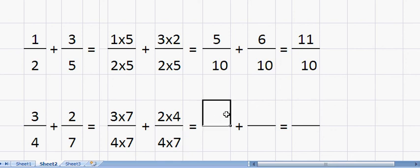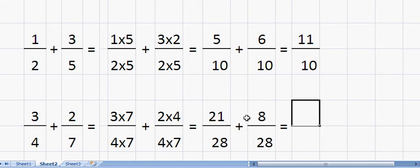So that gives us on the top 21, and on the bottom 28. On the top here we've got eight, and on the bottom we've got 28. That's four by seven. And when we add 21 and eight, we get 29 over 28, which is our final answer.